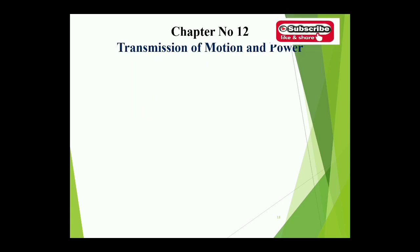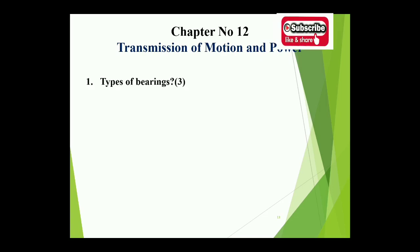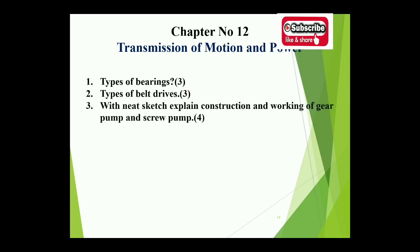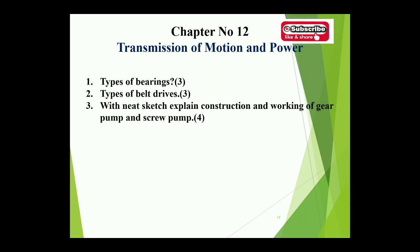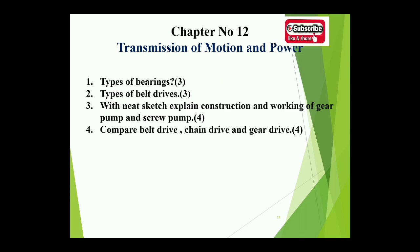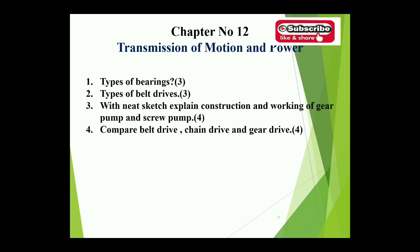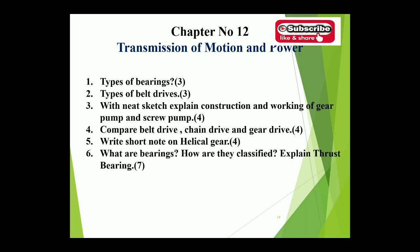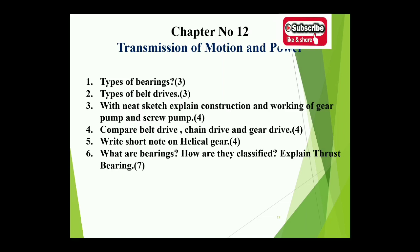Chapter twelve covers transmission of motion and power. Topics: types of bearings, 3 marks. Types of belt drives, 3 marks. Compare belt drive, chain drive, and gear drive, 4 marks. Write a short note on helical gears, 4 marks. What are bearings? How are they classified? Explain thrust bearings — this package is 7 marks theory.